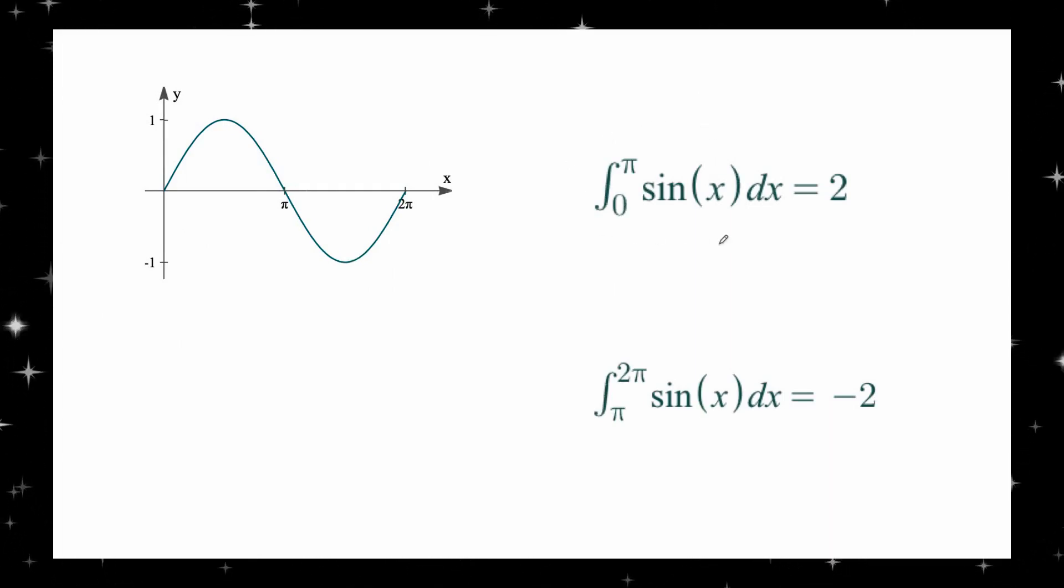For example, the definite integral of the sine function from 0 to π is 2, and this is the area under the function between 0 and π.